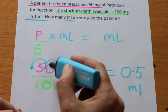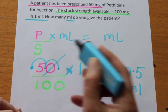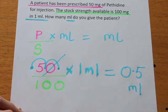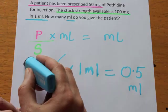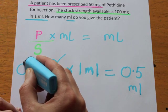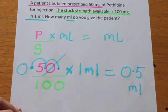Notice how the trailing zero has dropped off at the end — it doesn't mean anything. And notice how we put a zero at the beginning to avoid any confusion.